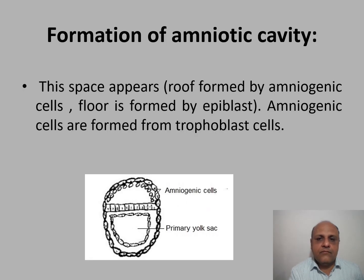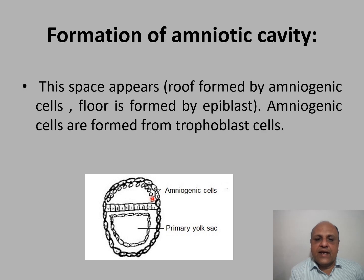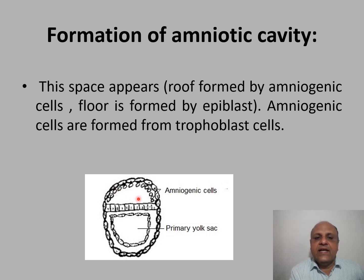Next, the amniotic cavity is formed. A space appears and amniogenic cells arise from the trophoblast cells. The roof of the amniotic cavity is formed by amniogenic cells and the floor is formed by the epiblast.